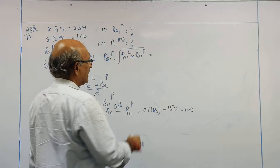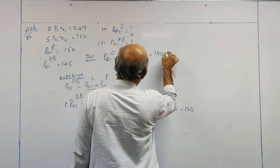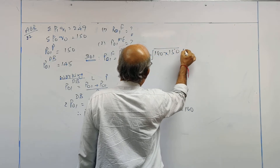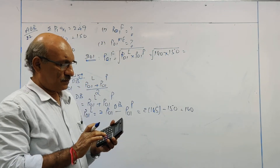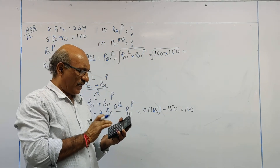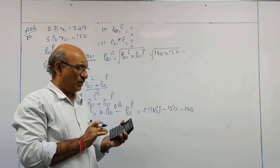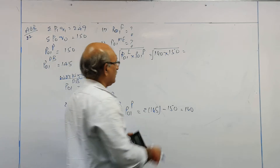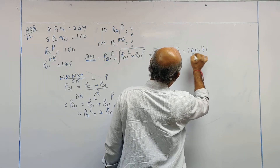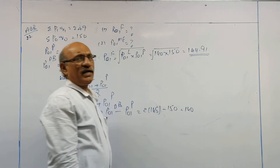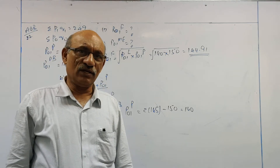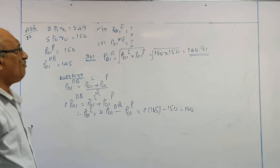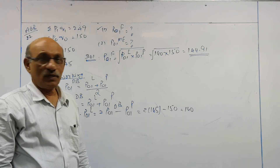Fisher's index number = under root of Laspeyres × Paasche's = under root of 140 × 150 = 144.91. That is the answer to the first part of the question.